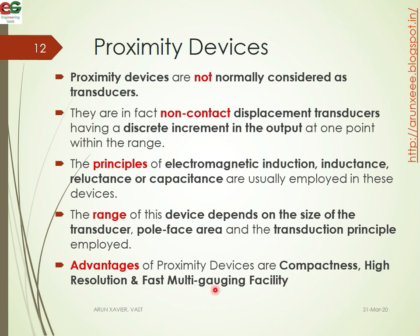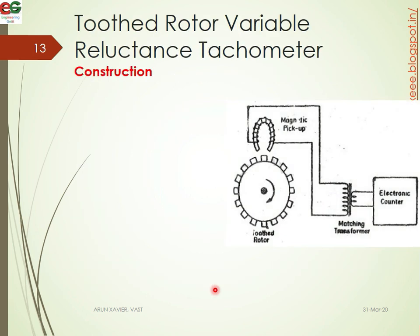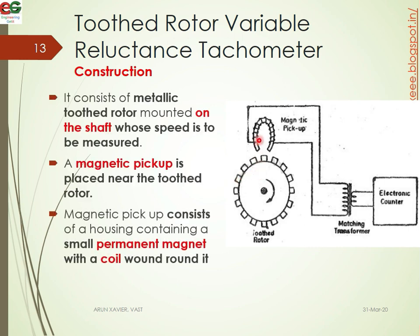Proximity devices use inductance. The different measurements use proximity devices. One example is the toothed rotor variable reluctance tachometer. We use a toothed rotor with different teeth, and a magnetic shield is mounted. The hydraulic tooth is mounted and we fix the metallic tooth. This is the magnetic pickup, these are the windings, and this is the metallic tooth — it generates EMF counted by a counter.